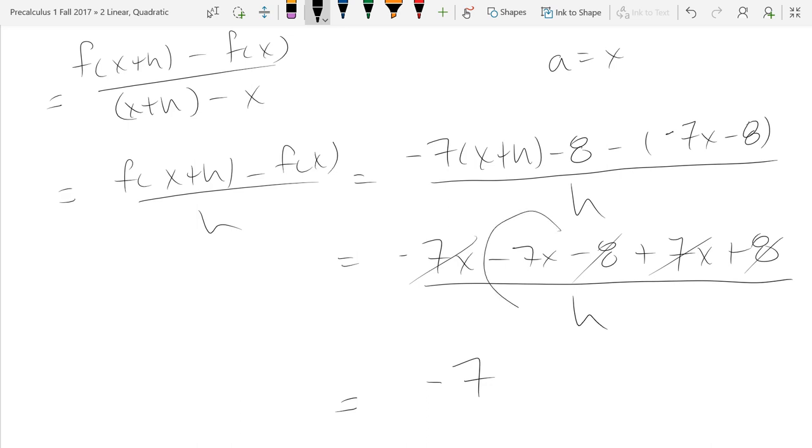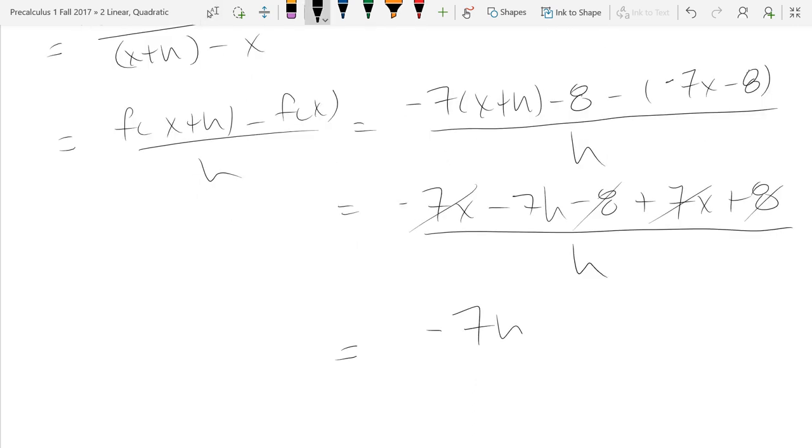Uh-oh. What should this term be right here? It should be a 7h. So that's what I call the spidey sense right there. If you know things, the terms remaining should all have h's in them and then you get down and there's a 7x, then something probably went wrong. So we got minus 7h over h cancels to minus 7.